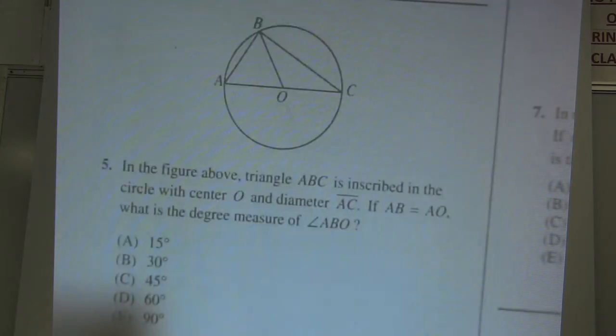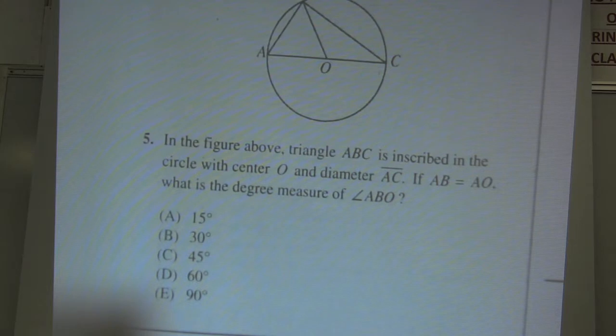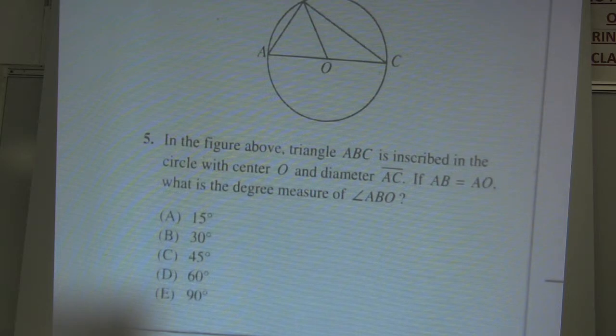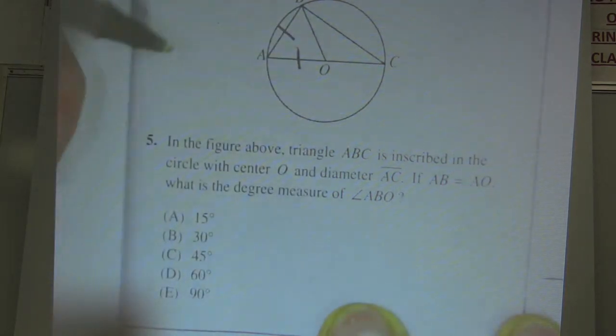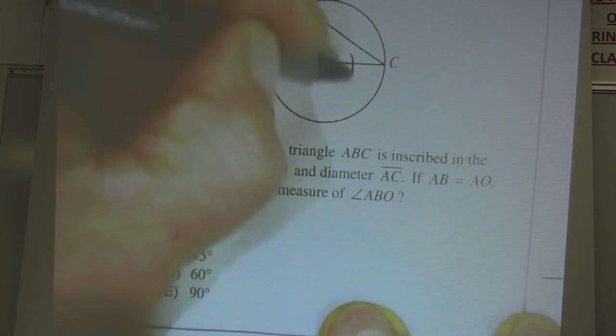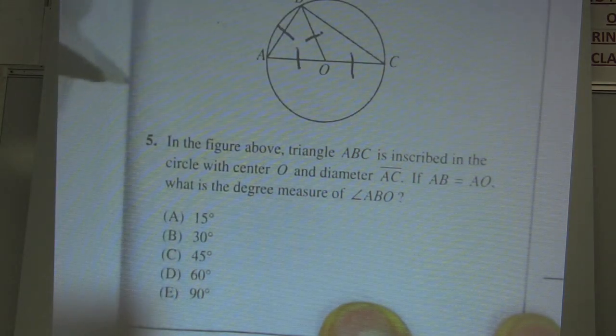Okay, number five. In the figure above, triangle ABC is inscribed in the circle with center O and diameter AC. If AB equals AO, okay, this guy equals this guy. Now notice, AO is a radius of a circle.